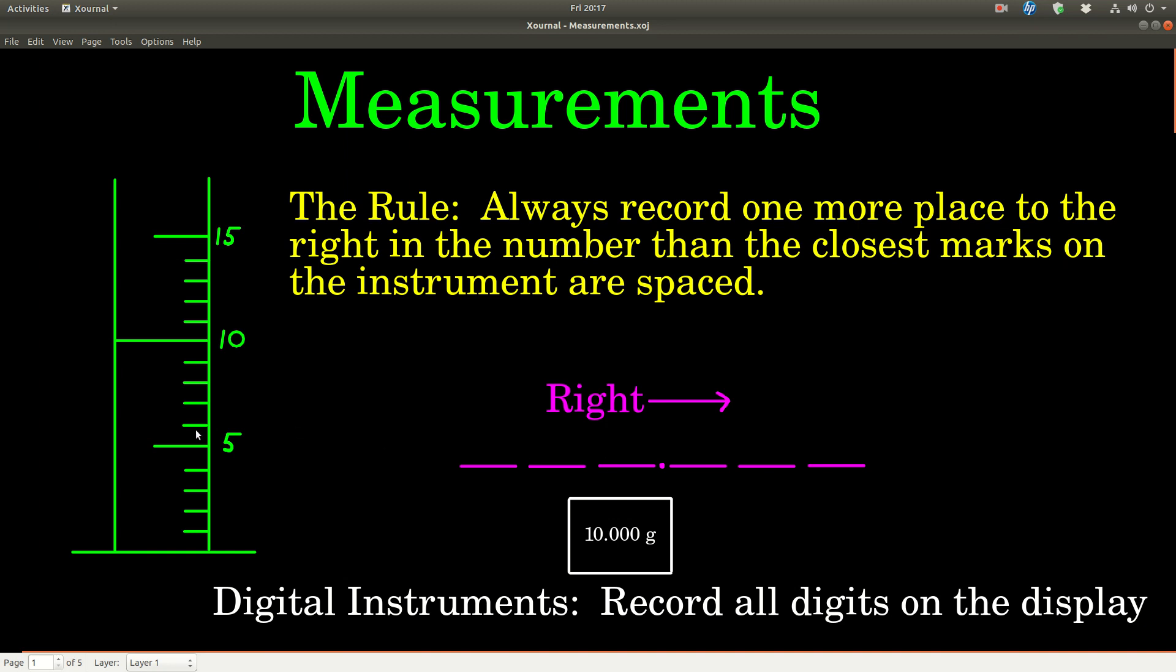Because the closest marks are in the ones place, we would record any measurement we make with this instrument one more place to the right, which in this case would be the tenths place. Now if you're reading a digital instrument, this has all been taken care of for you. You just always remember to record every single digit that is on the display. For example, if you're using the balance and it reads 10.000 grams, all those zeros are important, so it's important to write down 10.000 grams and not just 10.